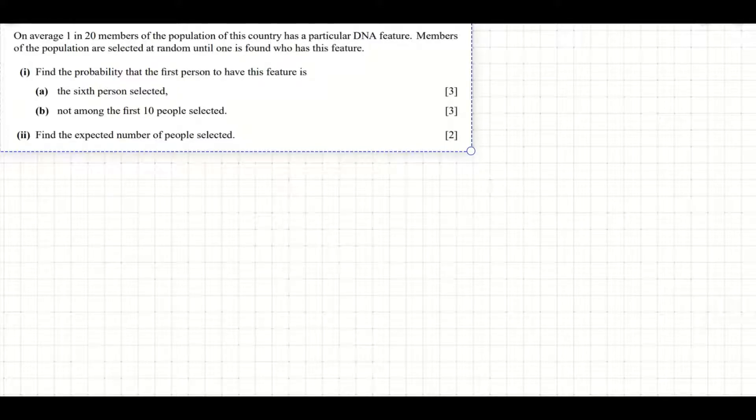And that's the classic geometric distribution. You take independent yes-no trials, or in this case, true-false trials, like has versus doesn't have the DNA feature. And you keep going until one is found, until you get the first success.